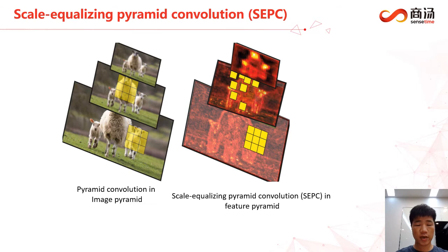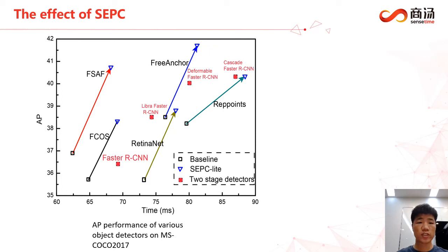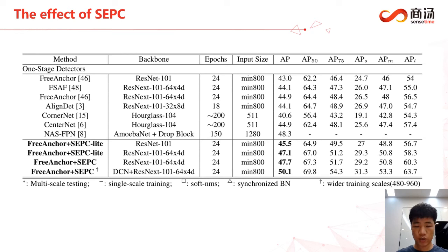To alleviate the discrepancy between the image pyramid on the left and the feature pyramid on the right, we propose the Scale Equalizing Pyramid Convolution. We have around 4 AP increase in MS COCO detection with minimal increase in inference time. We have also achieved the state-of-the-art using single model and single scale testing.